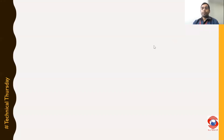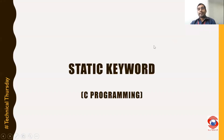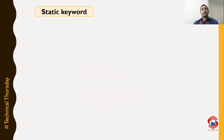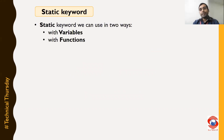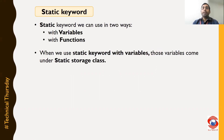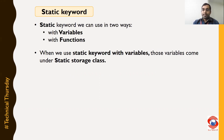Hello everyone. In today's video we are going to talk about the static keyword in C programming. Now let us understand how we can use the static keyword in our program. The static keyword can be used with variables as well as functions. When we use the static keyword with variables, those variables come under the static storage class.